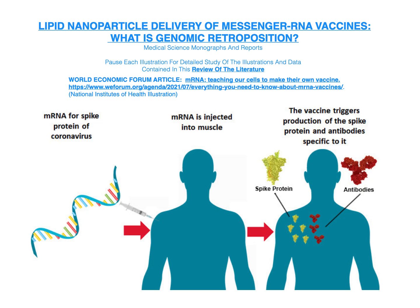Lipid Nanoparticle Delivery of Messenger RNA Vaccines. Pause each illustration for a detailed study of the illustrations and data contained in this review of the literature. mRNA for the spike protein of coronavirus is injected into muscle. The vaccine triggers production of the spike protein and antibodies specific to it.